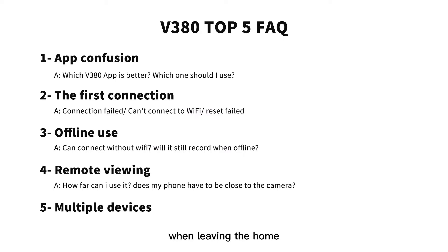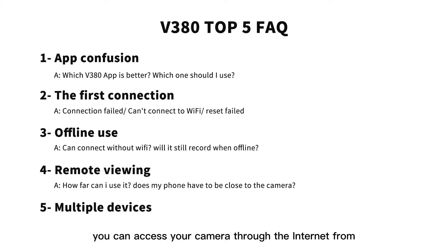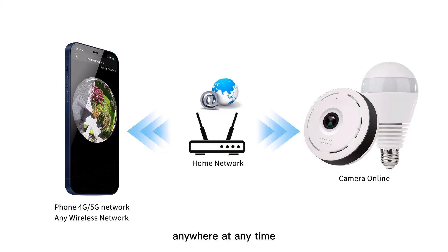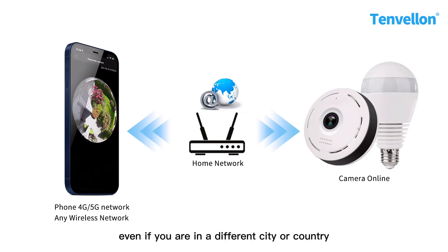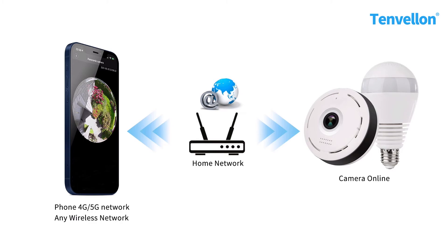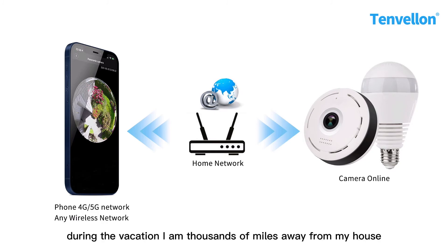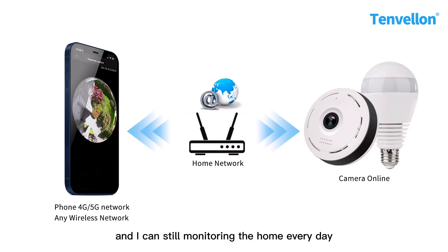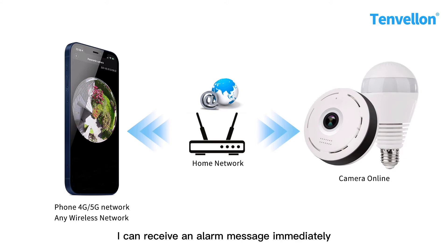The fourth question is remote viewing. Many people have asked whether it's possible to still watch the camera when leaving home. If your camera is successfully connected to the internet, you can access it from anywhere at any time — all data is transmitted through the network. Even if you're in a different city or country and your phone is on a different wireless network, you can still watch the video remotely. For example, during vacations I can be thousands of miles away from my house and still monitor the home every day.